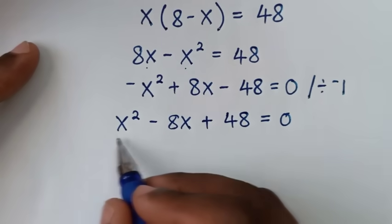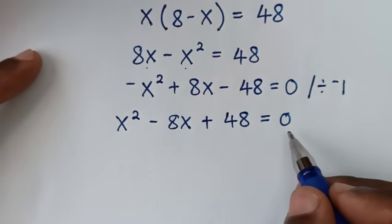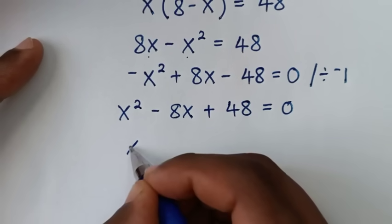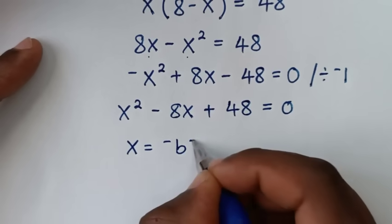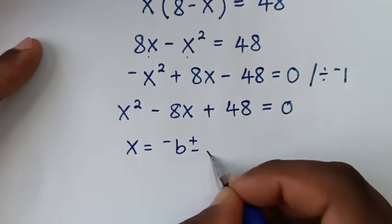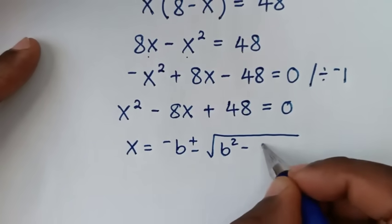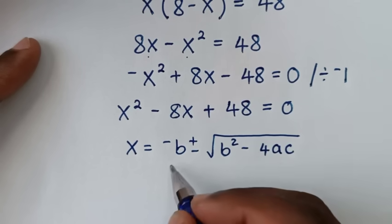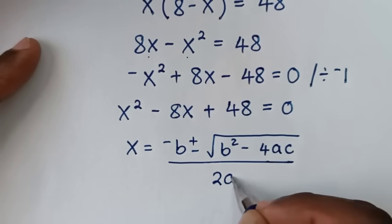Then from this quadratic equation, to find the values of x, we'll use the quadratic formula. From the quadratic formula, which is x is equal to negative b plus or minus square root of b squared minus 4ac over 2a.